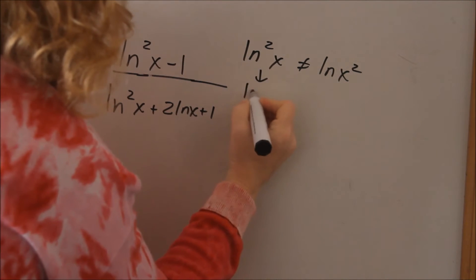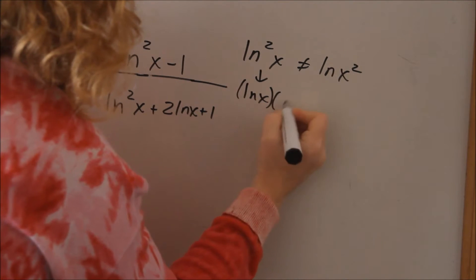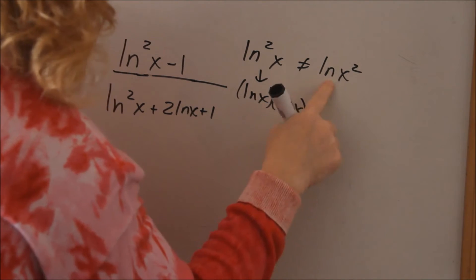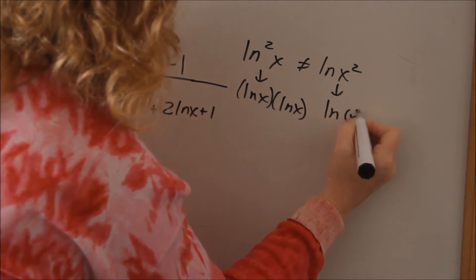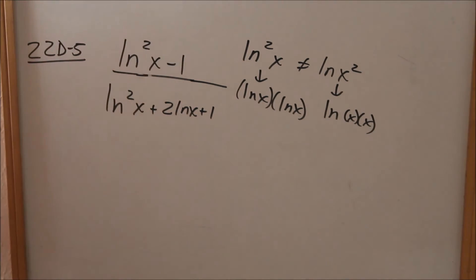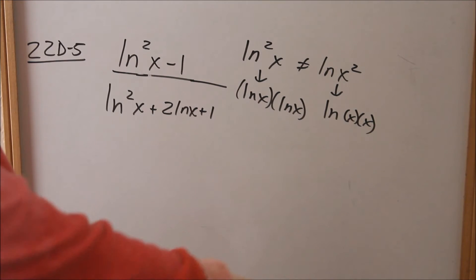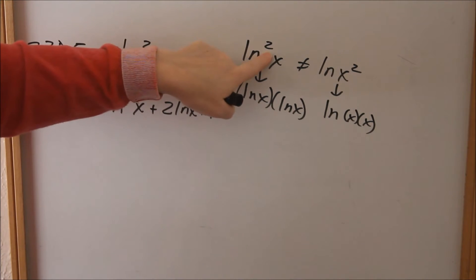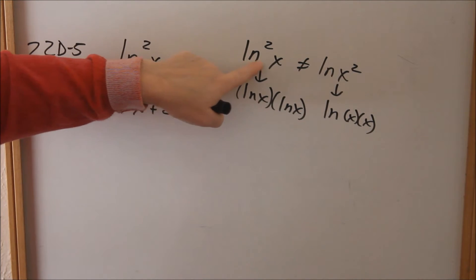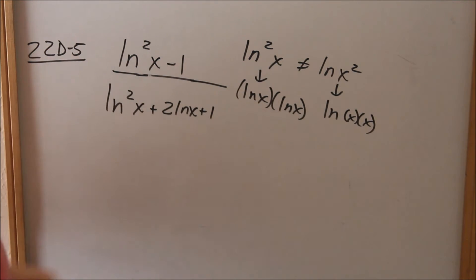This means natural log of x times natural log of x. That means natural log of x times x. So just be careful of where your exponent is. When you're reading this, the exponent is in between the natural log symbols and the x.